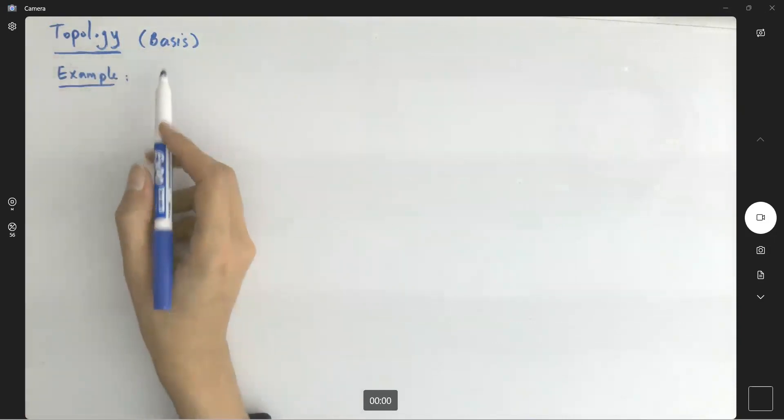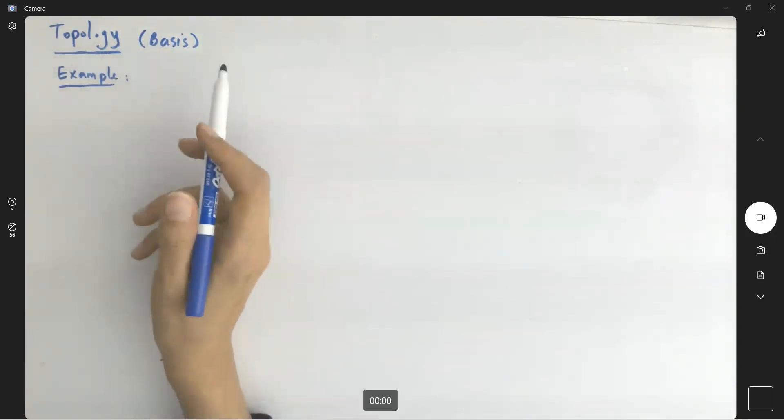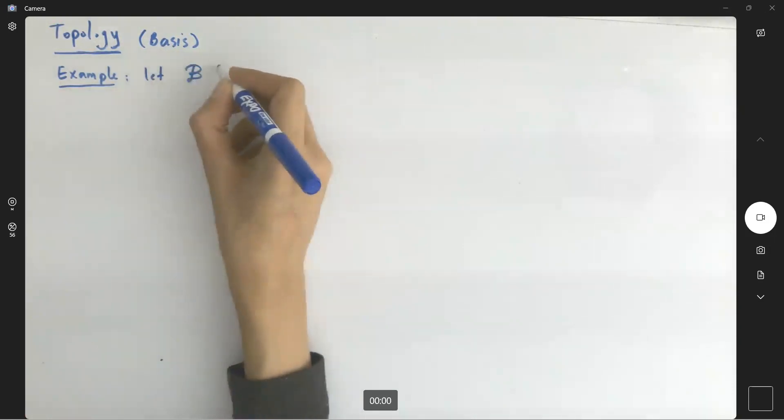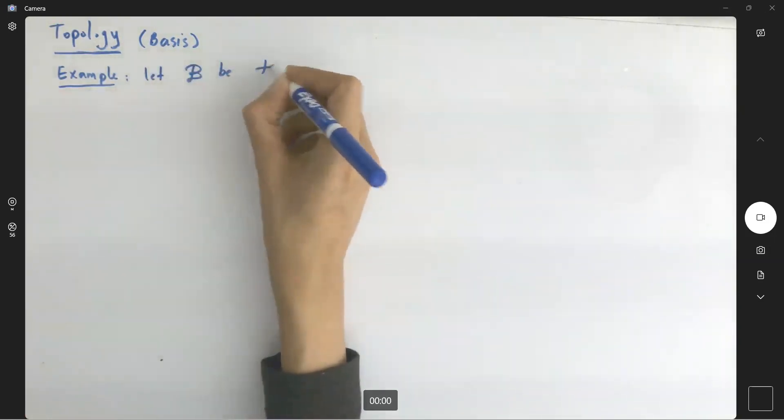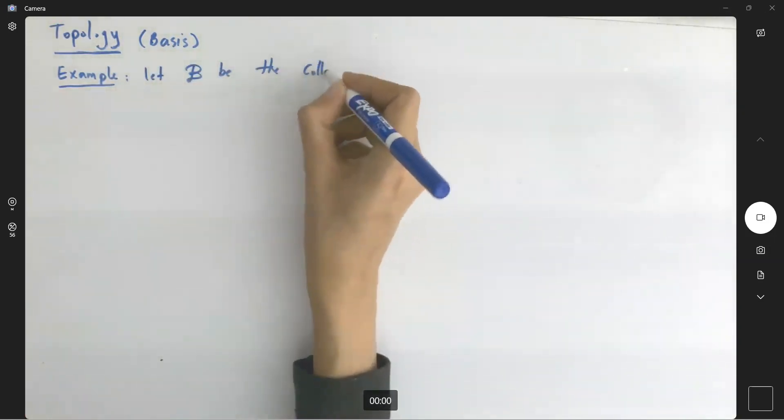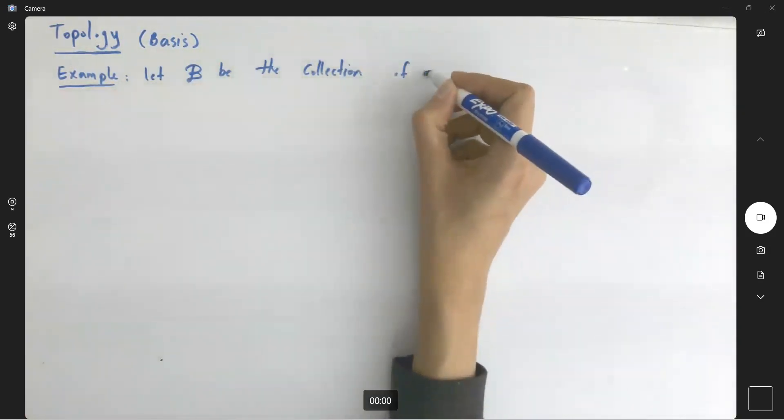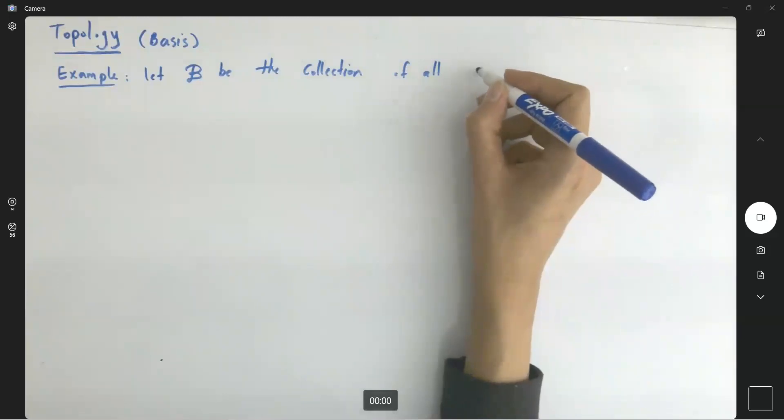In this example, first let's define the basis and then we talk about the topology generated by that basis. Let B be the collection of all circular regions.